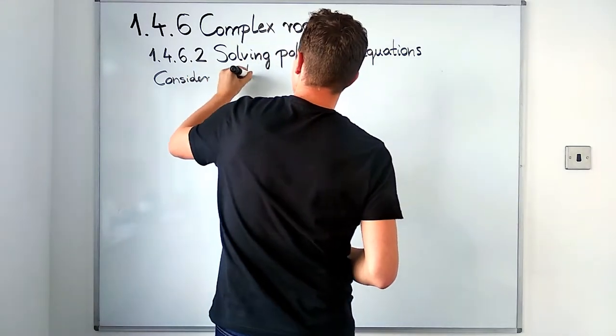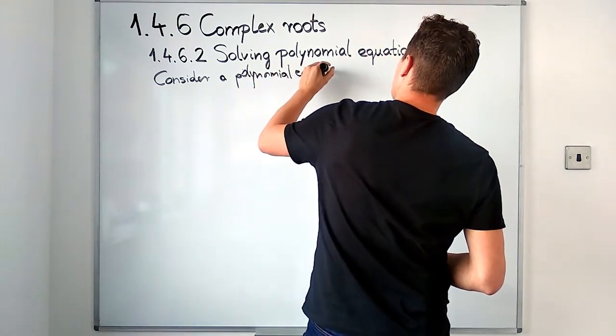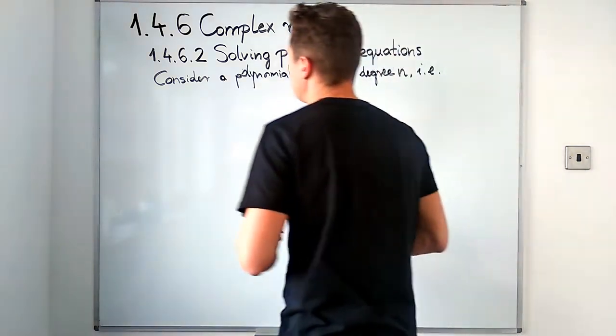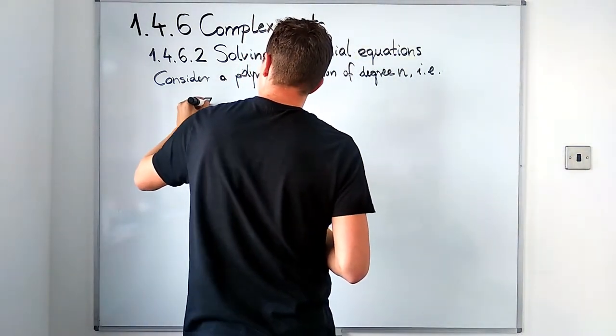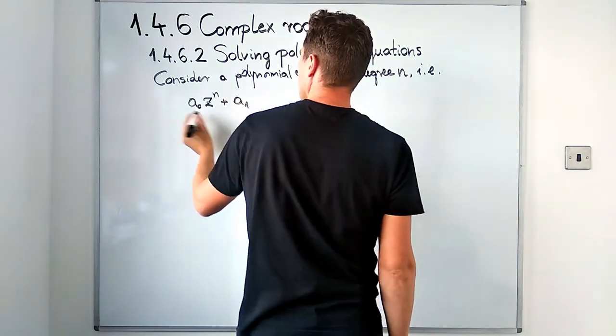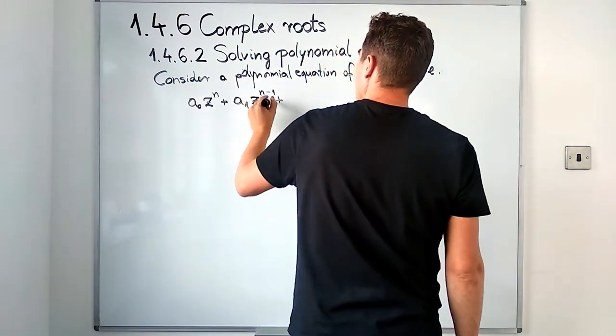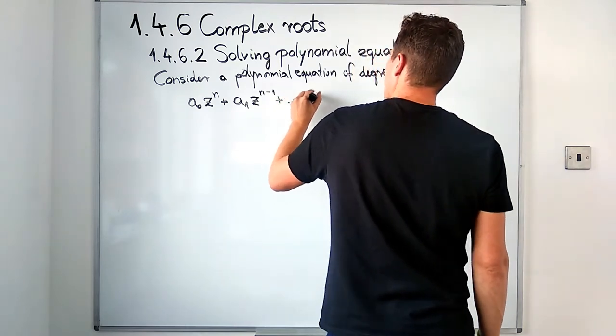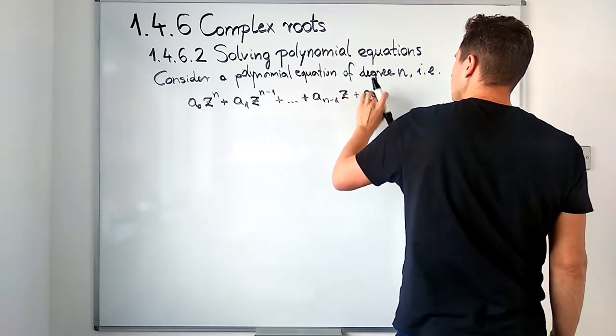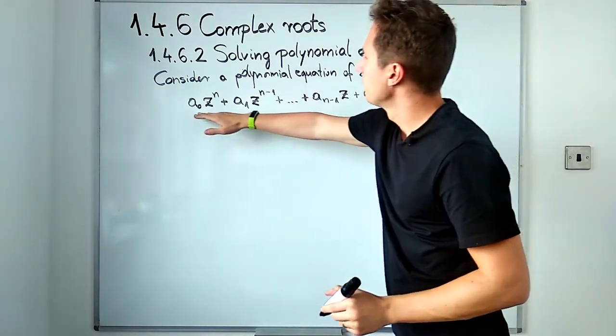Degree n - that is what I mean by that - is complex numbers multiplying powers of z, various powers of z which we add in such a way: a₀ times z to the nth power plus a₁ times z to the n minus first power, all the way to aₙ₋₁ multiplying z to the first power, plus aₙ multiplying z to the zero's power which is just one. So that is the constant term in our polynomial.